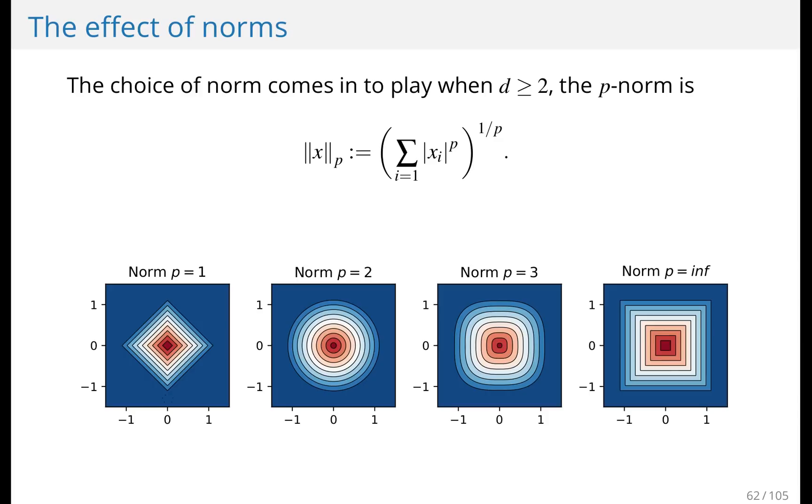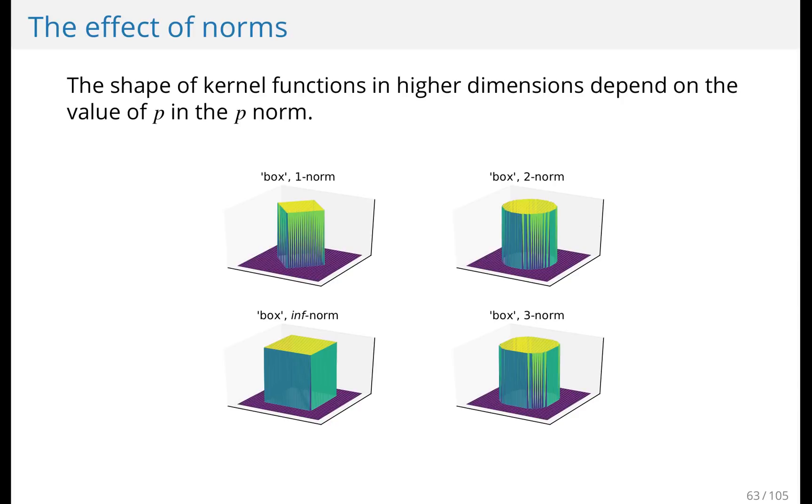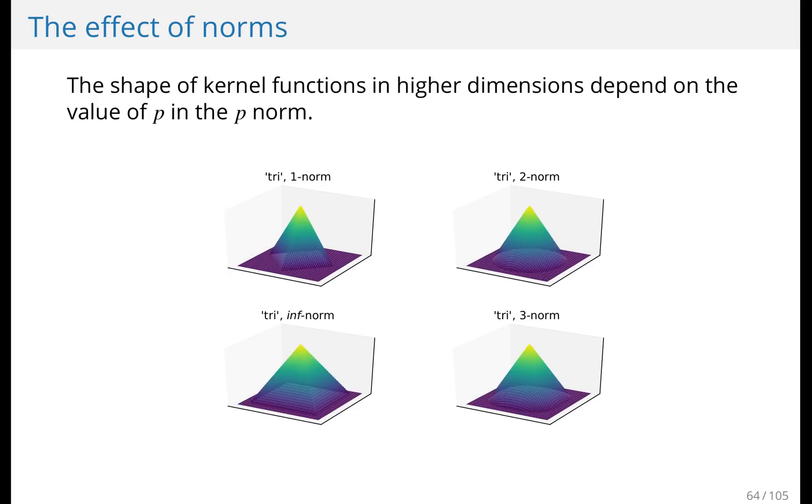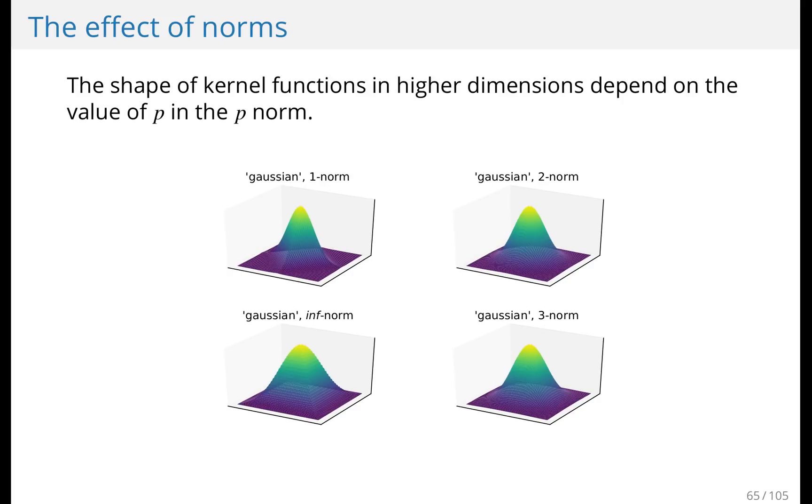The common choices are P equals one, P equals two, and P equals infinity. P equals one is often called the Manhattan distance because it's the distance that you have to travel in a grid. So imagine the city of Manhattan with the streets looking like a grid. P equals two is the Euclidean norm and P equals infinity is the maximum norm. Let's look at these kernel functions as we change the norm. The box kernel looks different in different norms. And so does the triangular kernel and the Gaussian kernel.